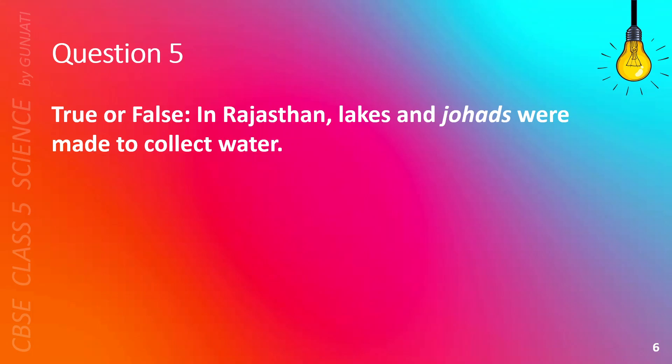Question 5. True or false? In Rajasthan, lakes and johads were made to collect water. A. True, or B. False. The correct answer is A, True.